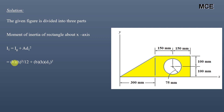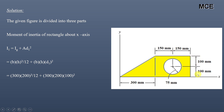The moment of inertia of the rectangle about its own centroidal x-axis is given as: width × height³ / 12, plus area (width × height) × d₁². The width of the rectangle is 150 + 150 = 300 mm, the height is 100 + 100 = 200 mm, and the distance between the centroid and the x-axis is 100 mm. Substituting values, the moment of inertia of the rectangle about the x-axis is 800 × 10⁶ mm⁴.